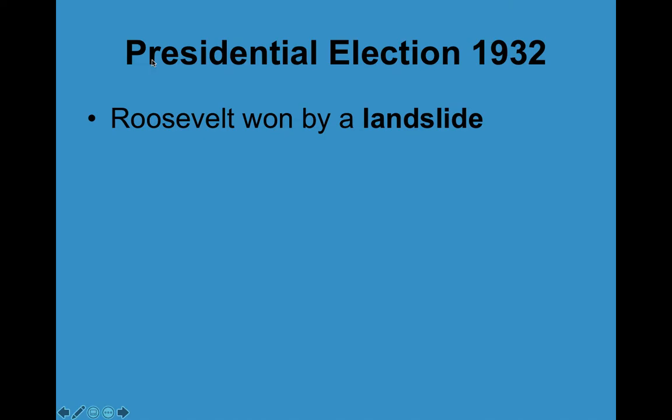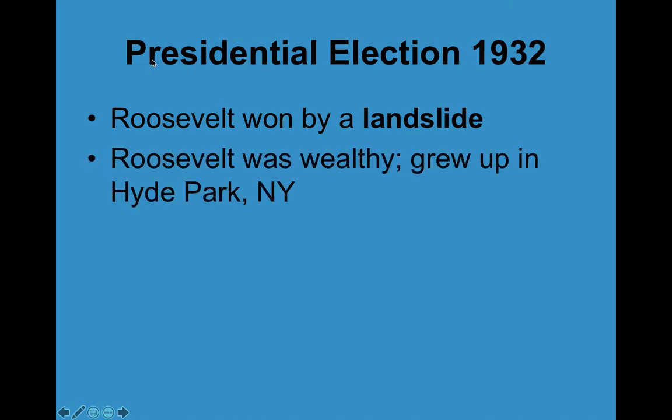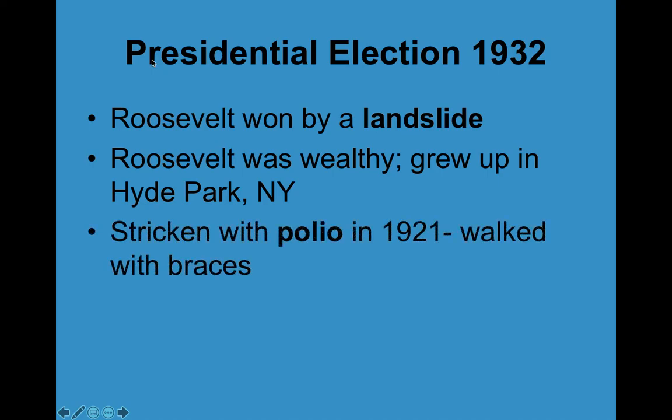Roosevelt won by a landslide. He had grown up in Hyde Park, New York, and grew up wealthy. He is related to Theodore Roosevelt — they're like cousins or second cousins, though I always forget the exact relation. In 1921, before he was president, Roosevelt got polio, and he walked with braces for the rest of his life. You'll often see pictures of him in a wheelchair because that was easier for him.